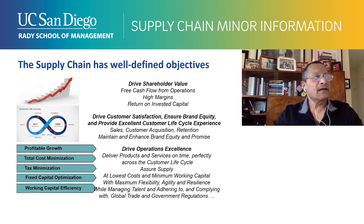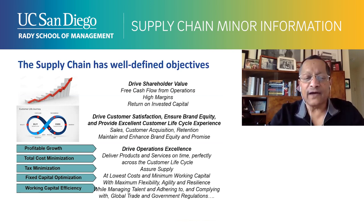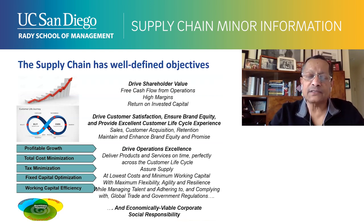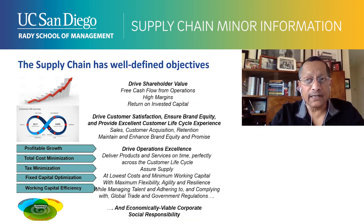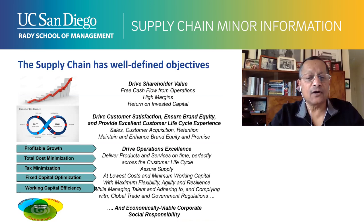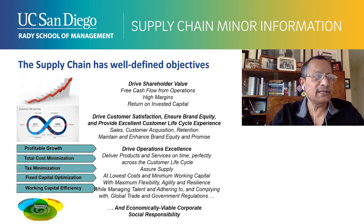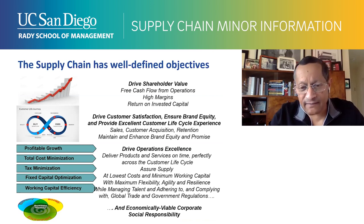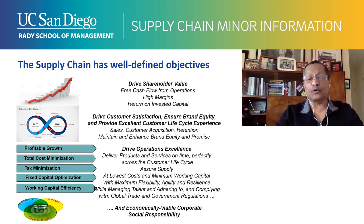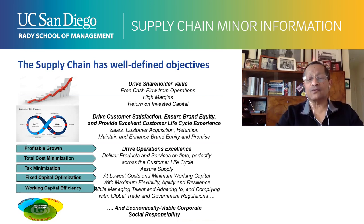It's about driving operations excellence at lowest cost, minimum working capital, and agility and resilience — the five factors that drive share price and shareholder value, all part of the supply chain. Finally, it's about managing the supply chain for corporate social responsibility. Five years ago in the boardroom, nobody talked about it. Today it's very important and we all have to work through it.